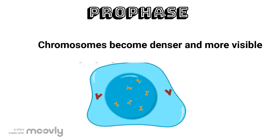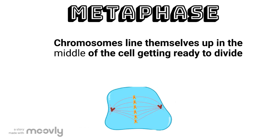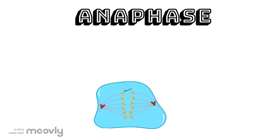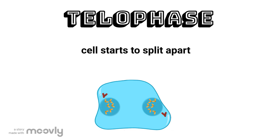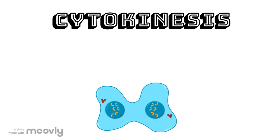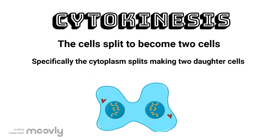Prophase is when the chromosomes become denser and more visible. Metaphase is next — this is where the chromosomes line up in the middle of the cell, getting ready to divide themselves evenly. Next is anaphase. In this stage of mitosis, the chromosomes go to the polar end of the cell and the spindle fibers get to work. In telophase, the cells start to split apart, and in cytokinesis, the cells split to become two cells. Specifically in this stage, the cytoplasm splits and finalizes the daughter cell.